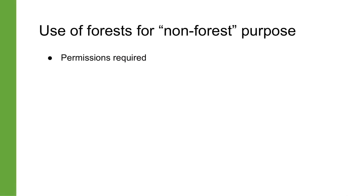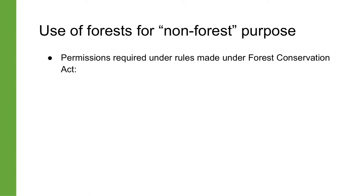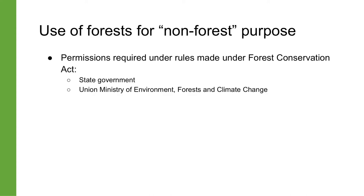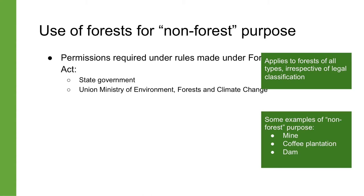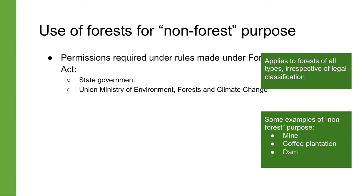Let's go through the procedures to divert forest land for non-forest purposes. Forest land can only be used for a so-called non-forest purpose with the permission of the state government and the Ministry of Environment and Forests. This includes forests of all types and not merely any particular legal class of forest. This means that any time forest land has to be used for a mine or a coffee plantation or a dam, it needs to go through the three-stage procedure laid out in the rules made under the Forest Conservation Act.